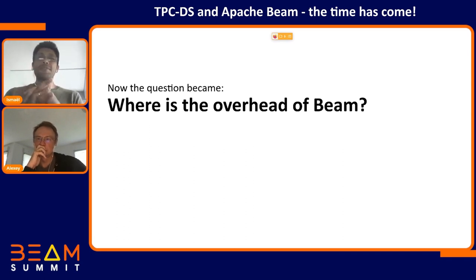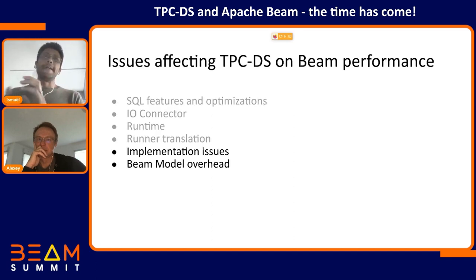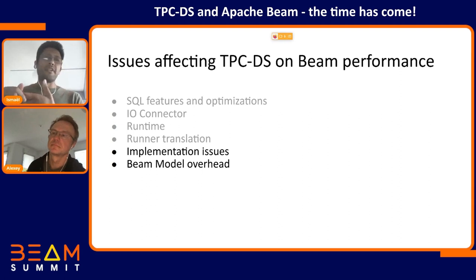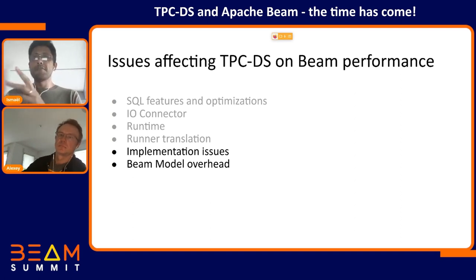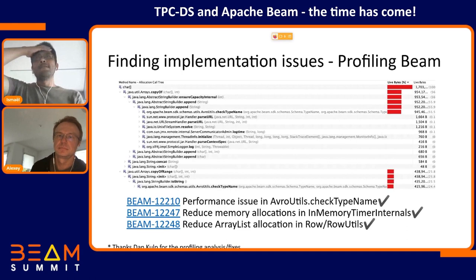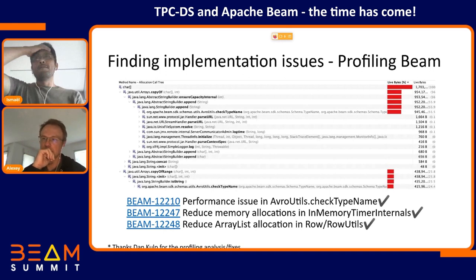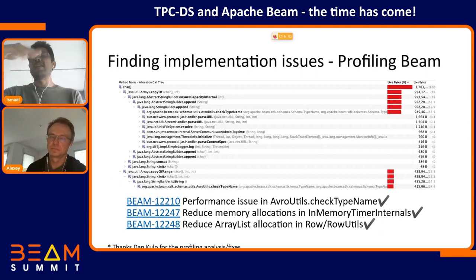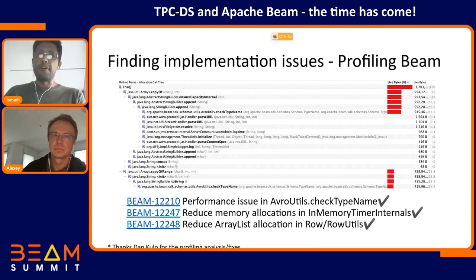Now the question changed from 'what is the overhead of Beam' to 'where is the overhead of Beam.' We already mentioned all the issues: SQL completeness and join optimization, the ParquetIO connector issues, runtime and translation issues with the read API. There are also implementation issues that hit us. Thanks to profiling these runs locally we found some typical Java performance mistakes — like creating lots of strings and concatenating them improperly, producing a lot of allocations. We fixed all of these, thanks especially to the profiling help we received.